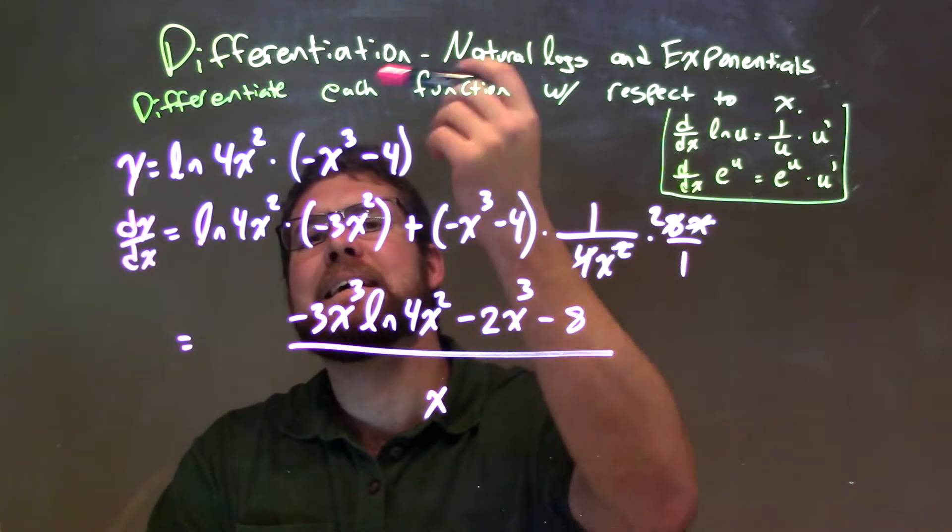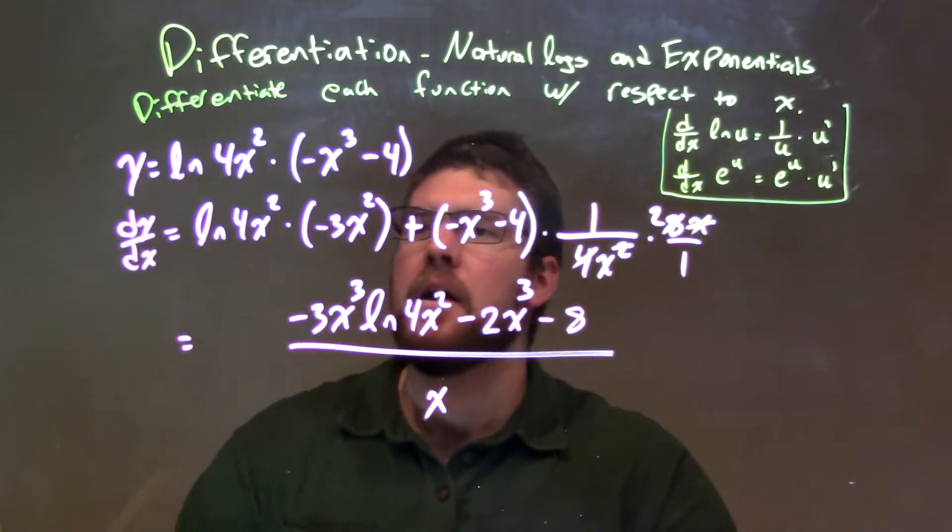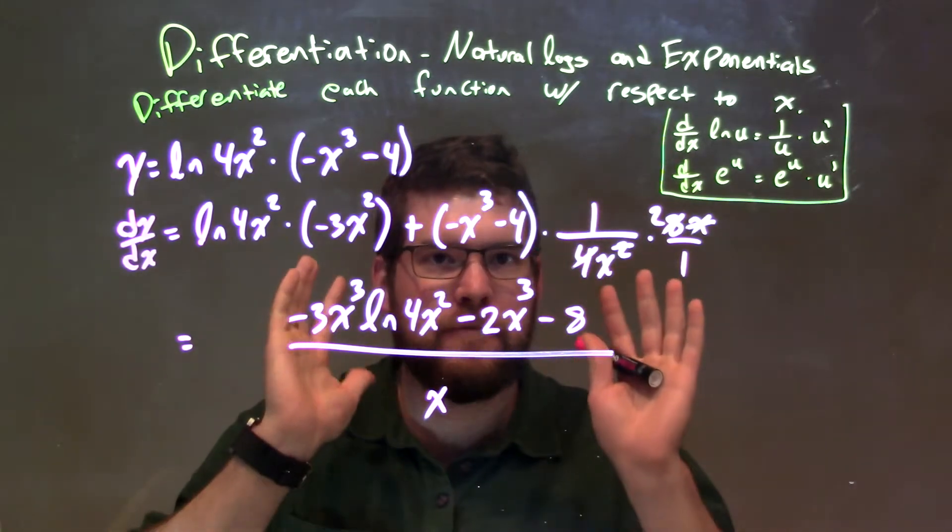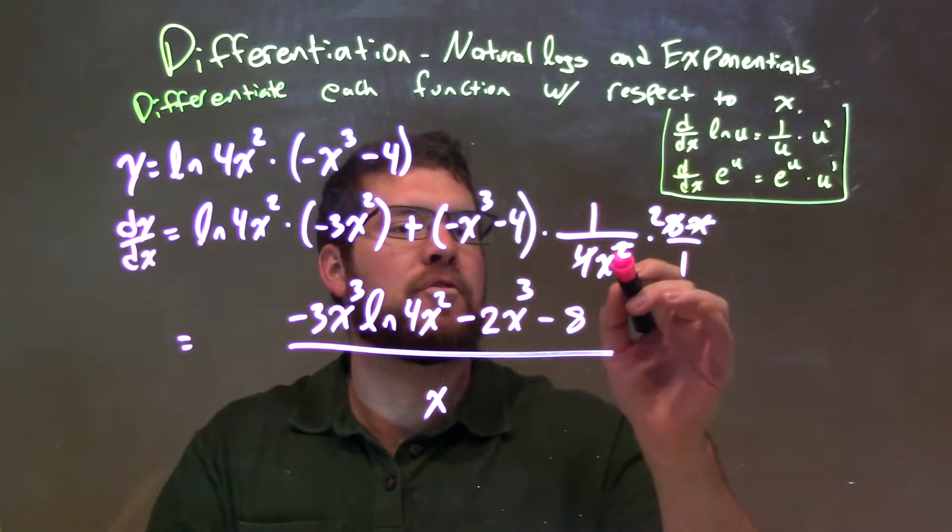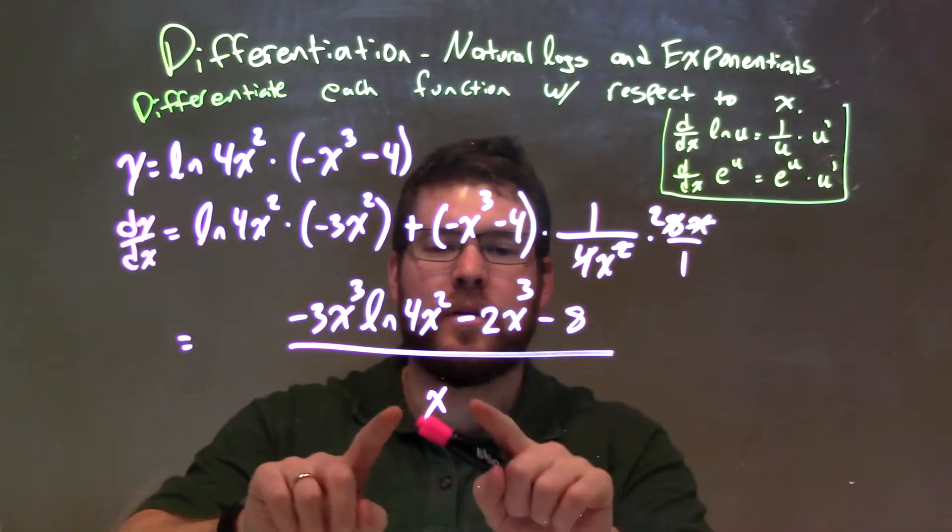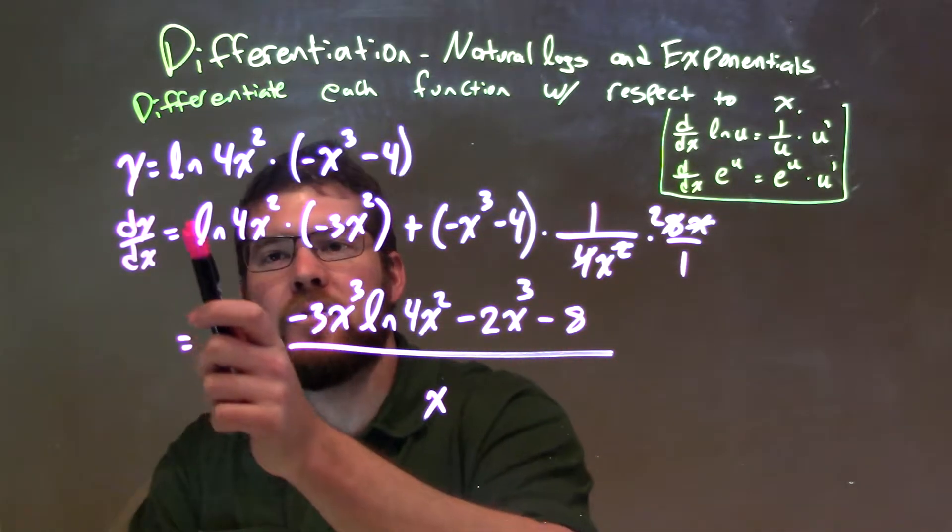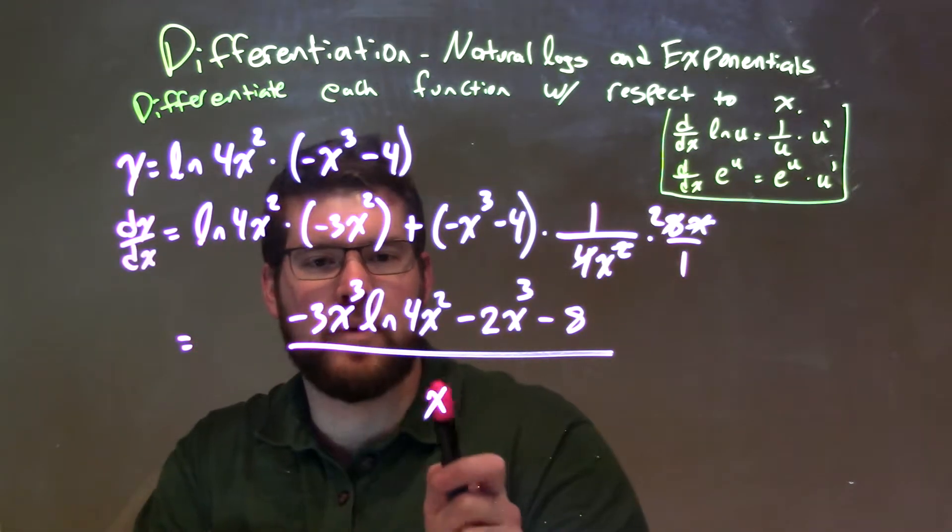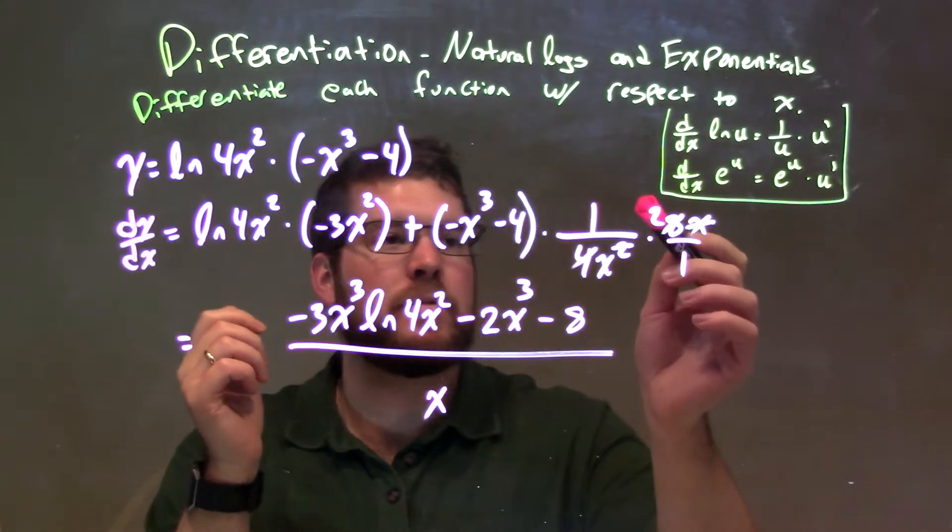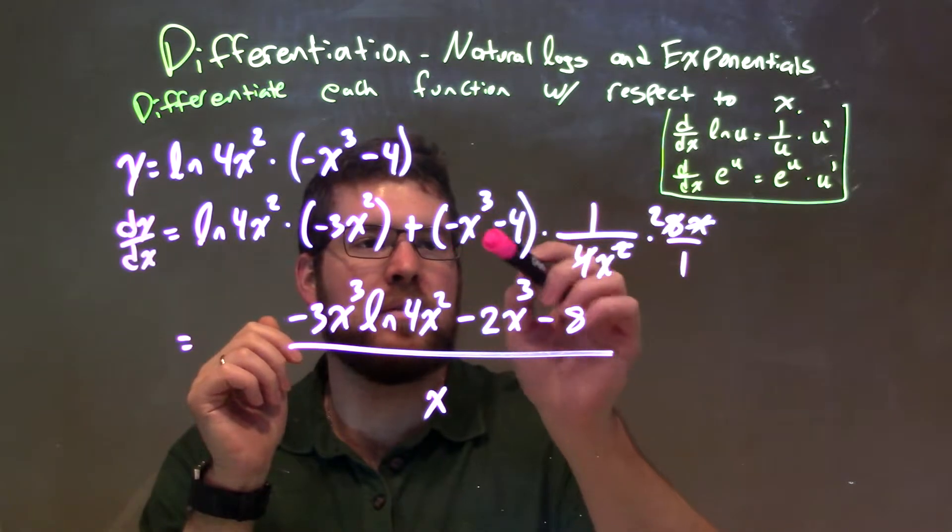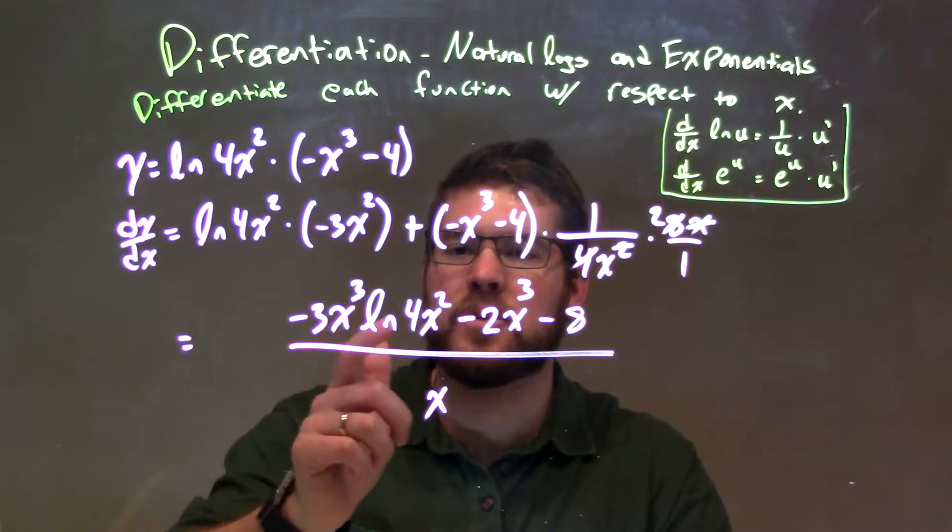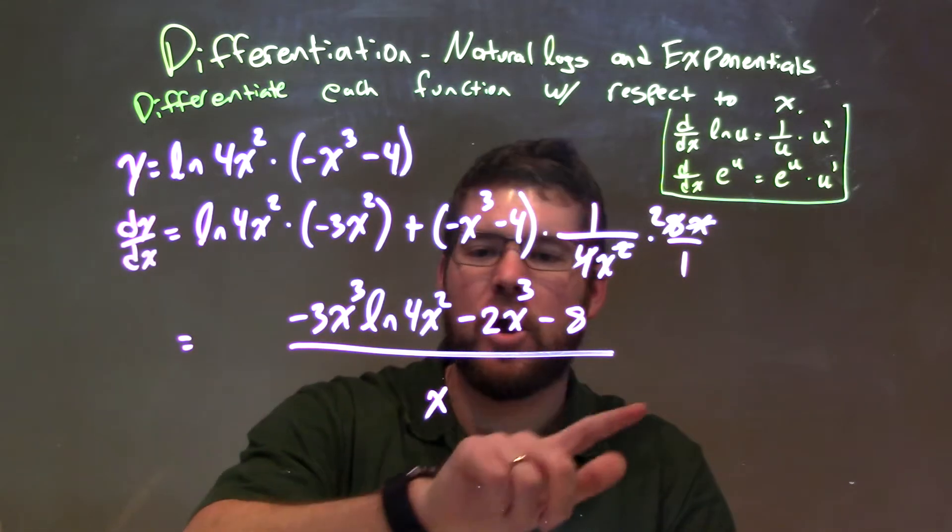We're given y equals natural log of 4x squared times the negative x to the third minus 3. Product rule, first part times the derivative of the second plus the second part times the derivative of the first. That's what we have there. Now, we simplify, right, x squared and x cancel, giving us just x in the denominator, and 8 over 4 giving us 2 in the numerator. We write this all over one big fraction of x, and that's what we have over here. So we multiply this part by x. Well, x squared can become x to the third power. We then simplify by distributing the 2 to both parts over here. 2 times negative x to the third, and 2 times minus 4. So, our final answer is negative 3x to the third times natural log of 4x squared minus 2x to the third minus 8 all over x. Thank you.